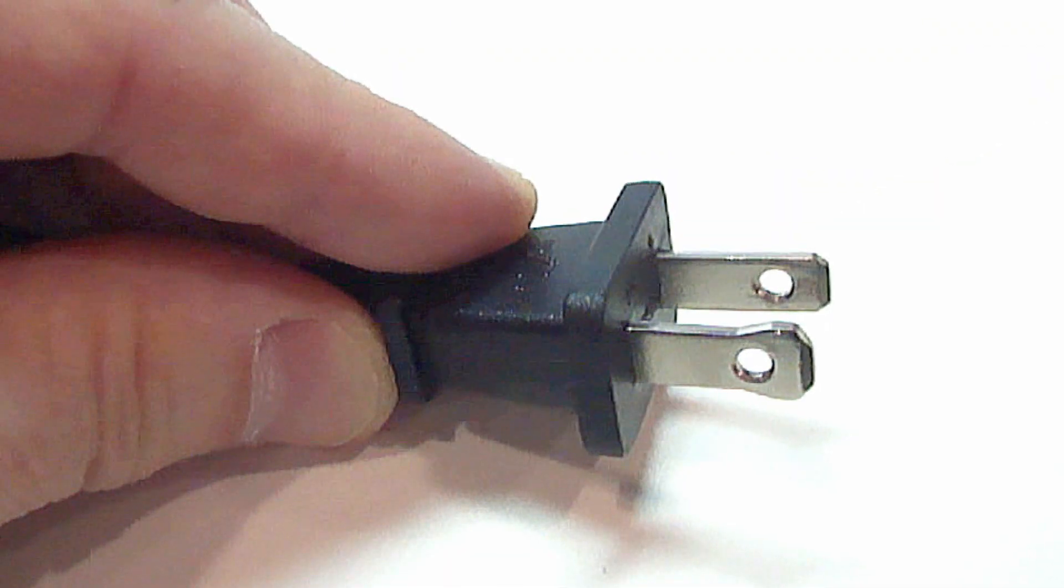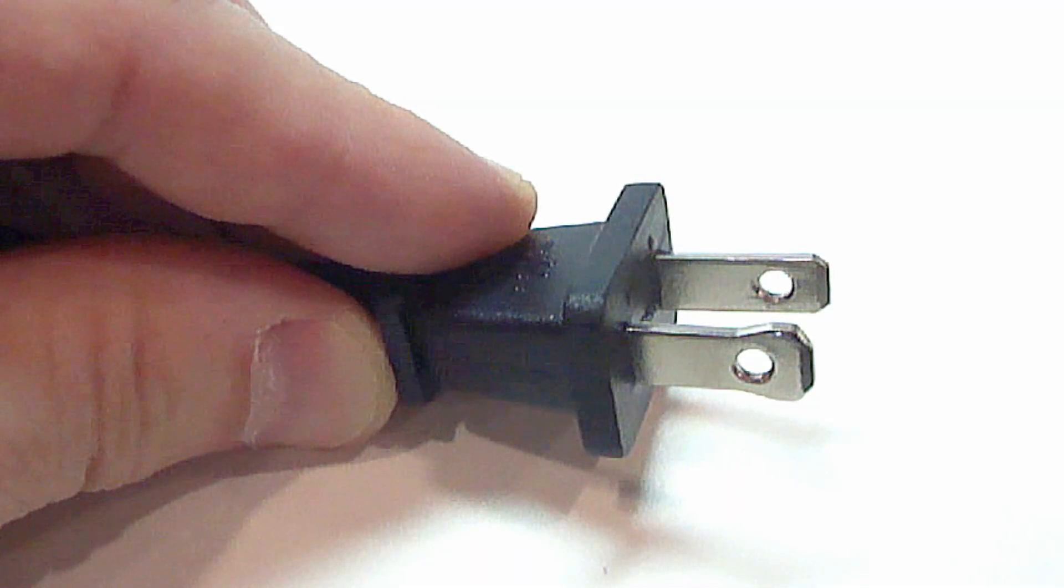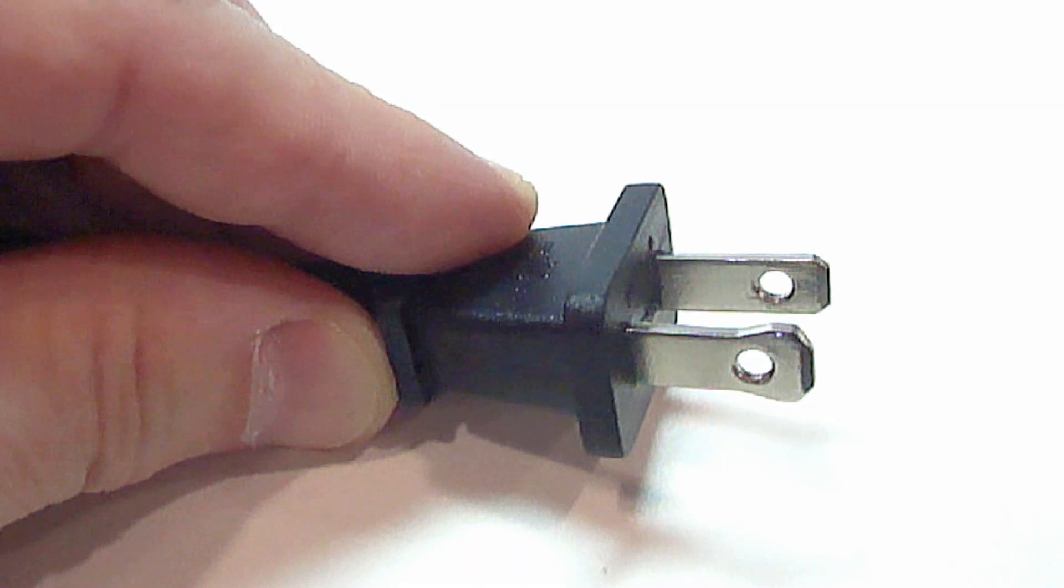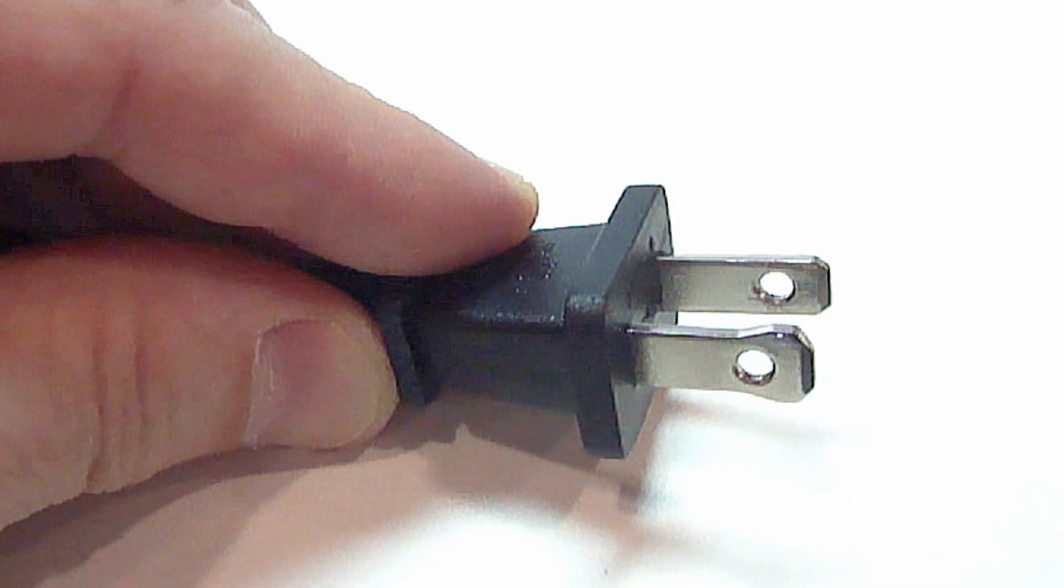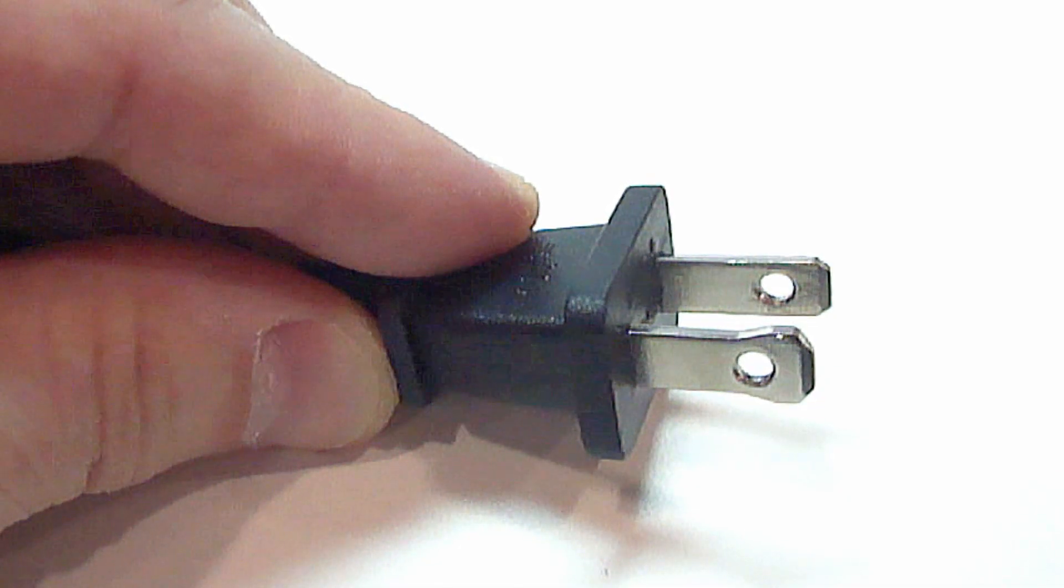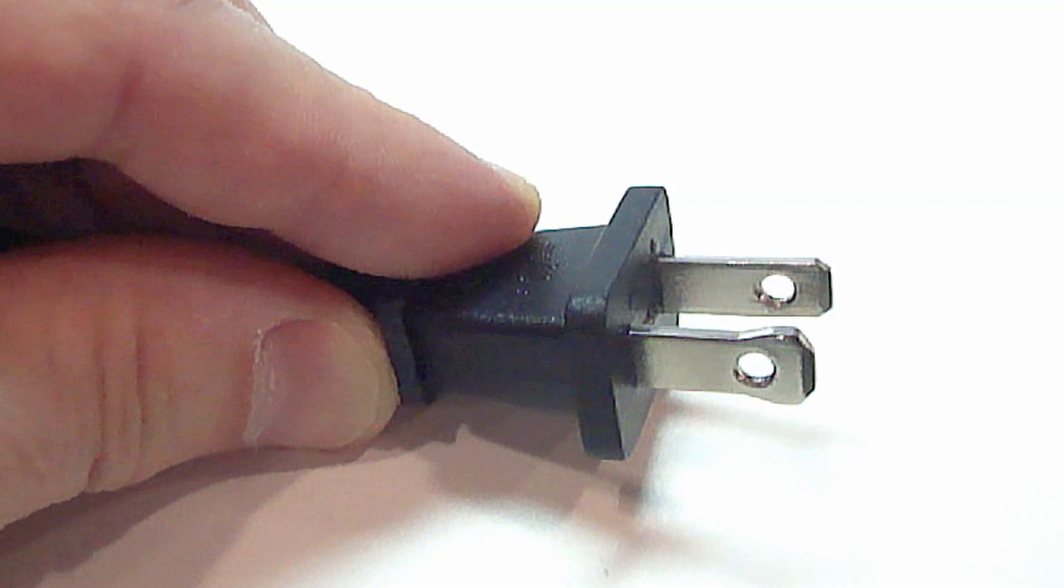The second reason for the holes is it allows you to wire power directly to the plug without using a receptacle. If for some reason you need to supply power to a device by way of direct wires, these holes would make it a lot easier by allowing you to connect the wires directly to the prongs.